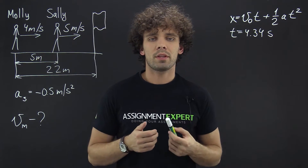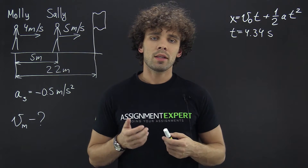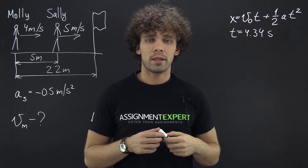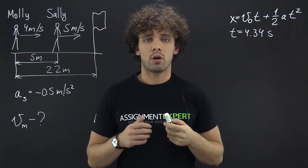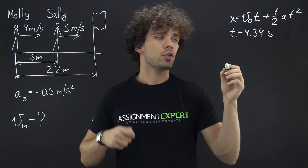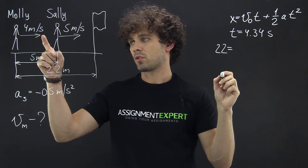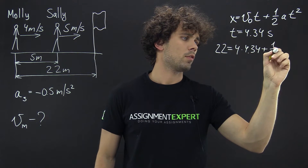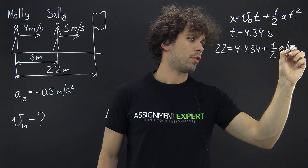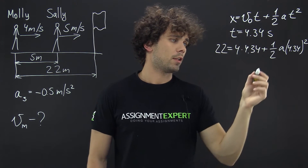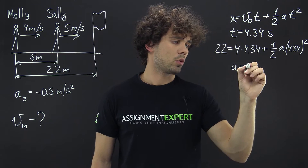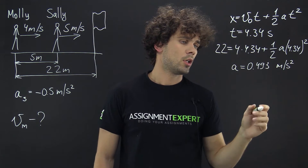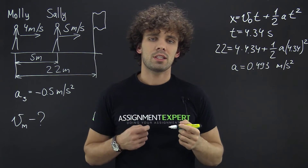Now that we have the time for Sally to finish the race, let's find the acceleration Molly needs to finish at the same time. Using the kinematic equation again: 22 = 4 × 4.34 + ½ × A × 4.34². Solving for A, we get the acceleration of Molly equals 0.493 meters per second squared.